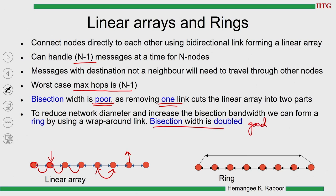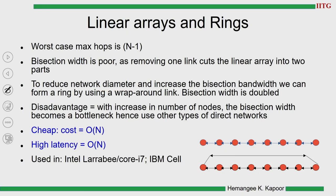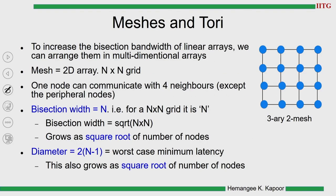What happens to the network diameter when we form a ring? It was n−1 earlier. Now instead of passing through all the nodes, we can take the direct link on the other side — so the diameter becomes half. To reduce network diameter and increase bisection bandwidth, we establish a wrap-around link from the last node to the first node. The cost grows as order n and latency is also order n.